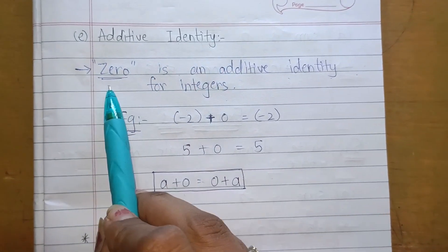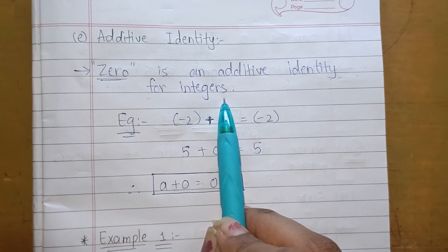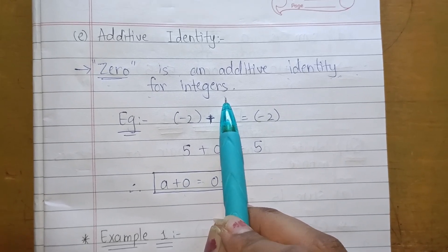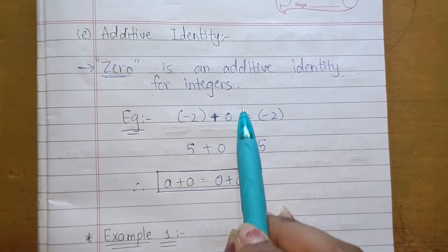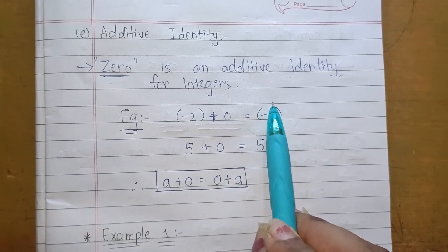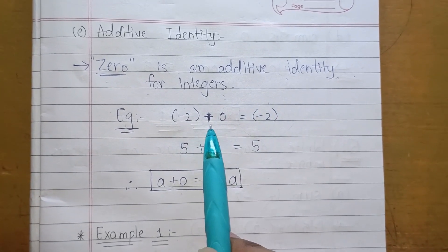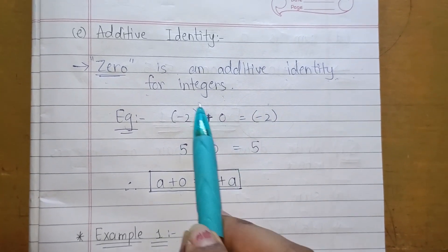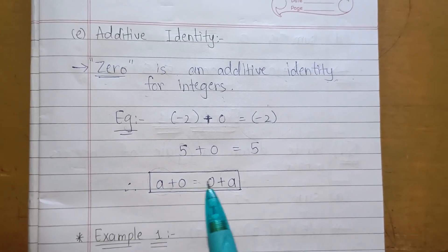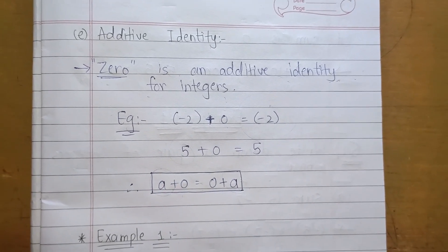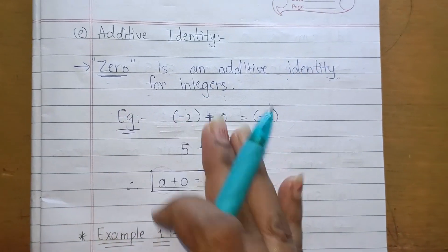The last property here is Additive Identity. Zero is the additive identity for integers. Additive identity means whenever we add 0 to any integer, we get the same integer. So whenever we add 0 to any integer, the result is that same integer. Therefore, 0 is the additive identity for integers.